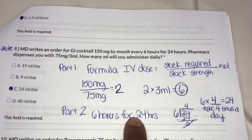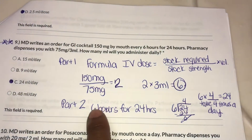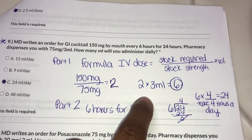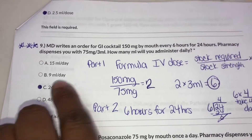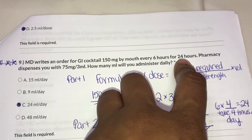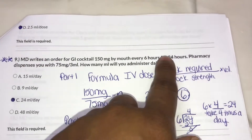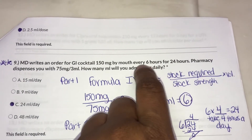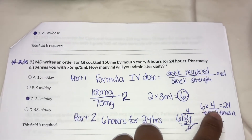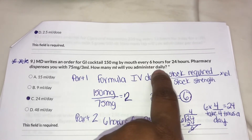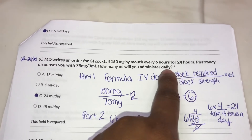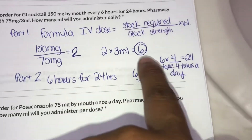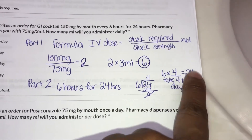Now for part two — it asks how much will be administered daily. The patient takes it every six hours for 24 hours, so 24 divided by 6 means they take it four times a day. Therefore, 6 ml times 4 equals 24 ml daily. That's how much the patient will get. Don't let the four throw you off — it's asking for the daily total, so the answer is 24 ml daily.